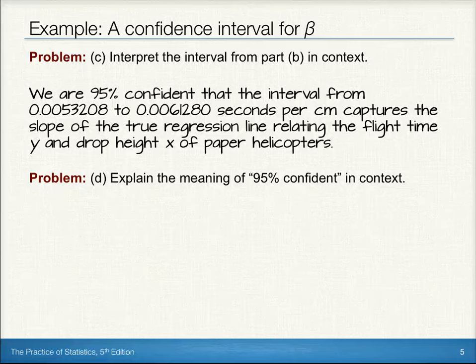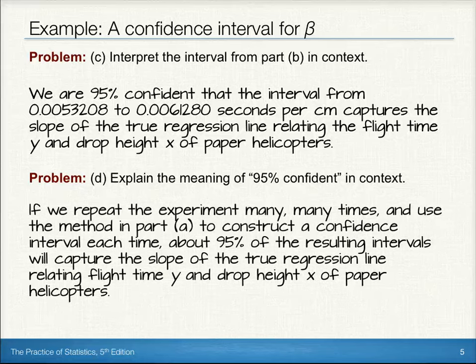Now, what does 95% confident mean? Well, that means if we repeat the experiment many, many times and use the method in part a to construct a confidence interval each time, then about 95% of the resulting intervals will capture the slope of the true regression line relating the flight time and drop height of paper helicopters.